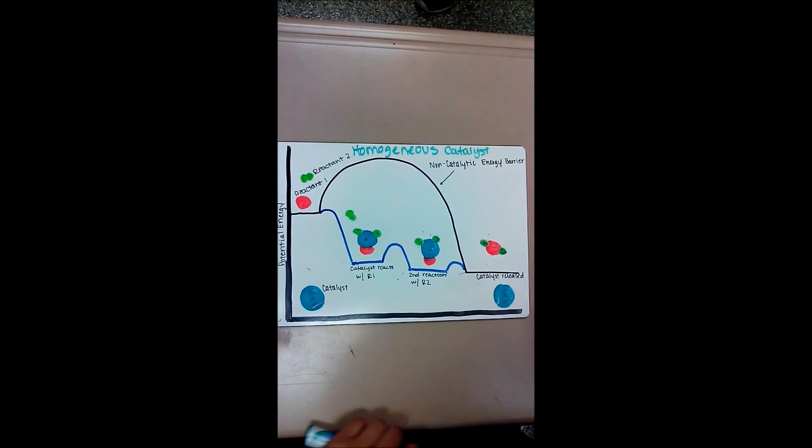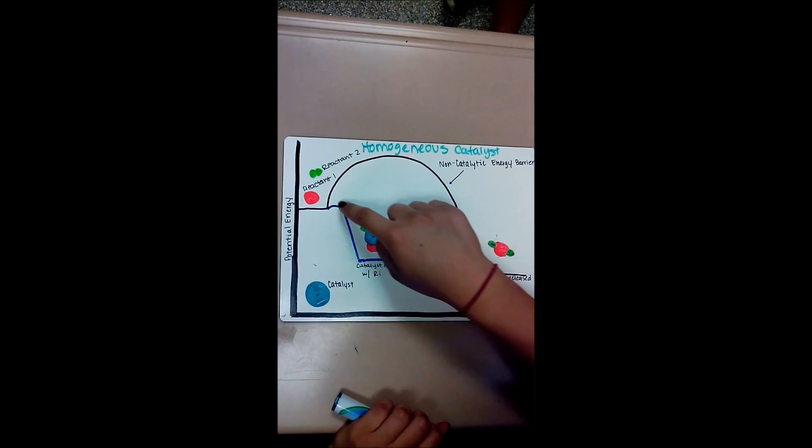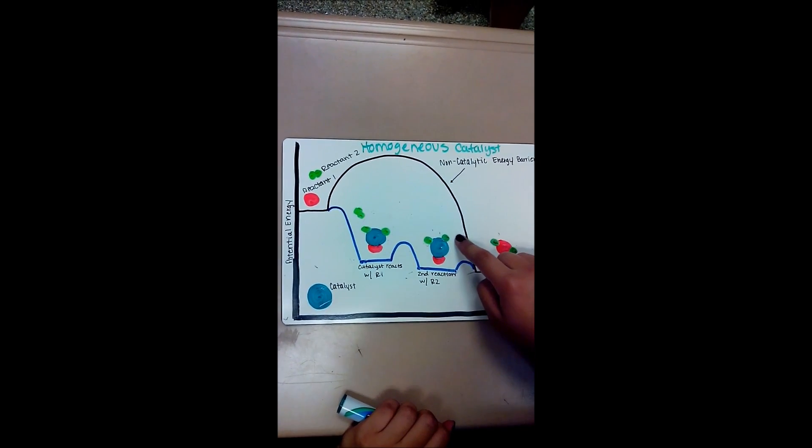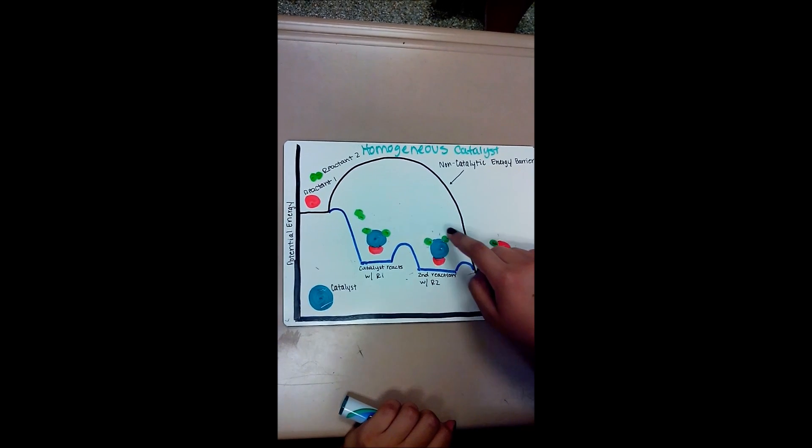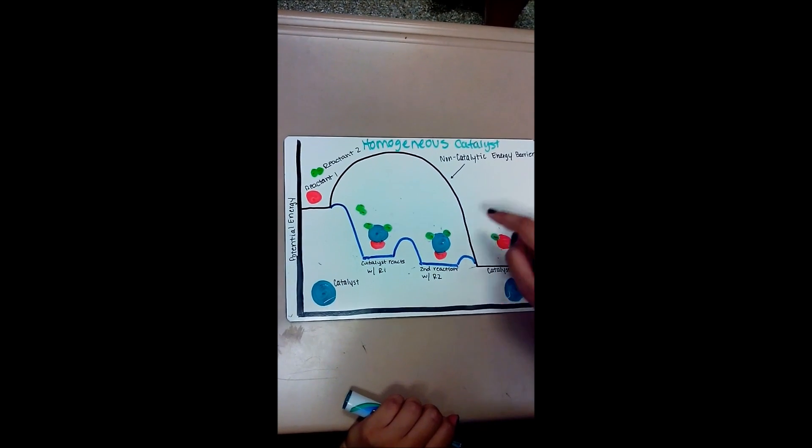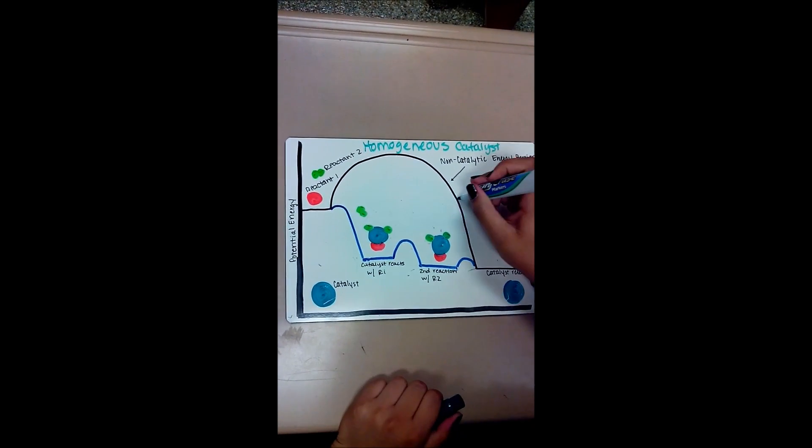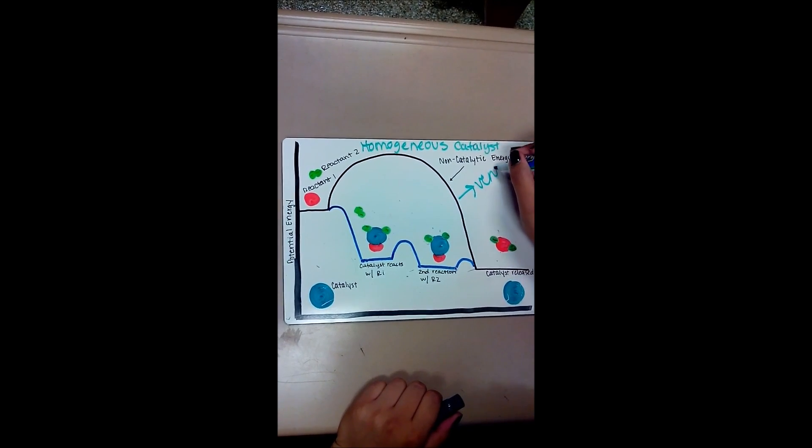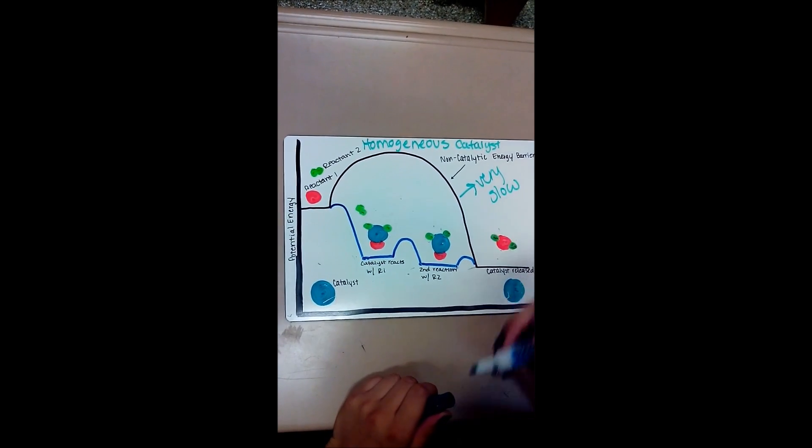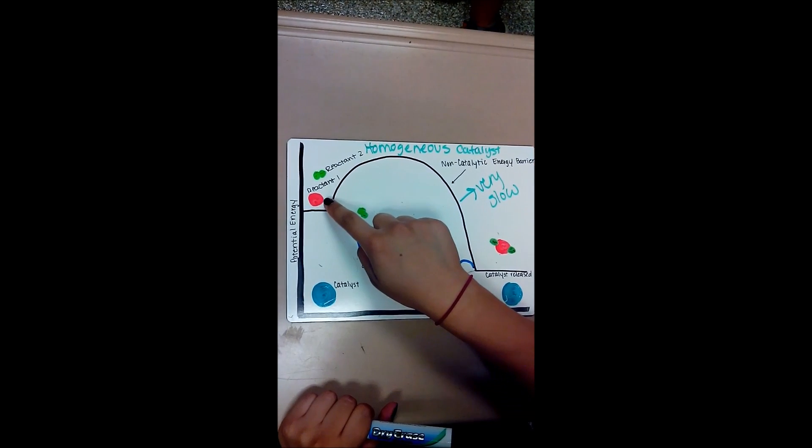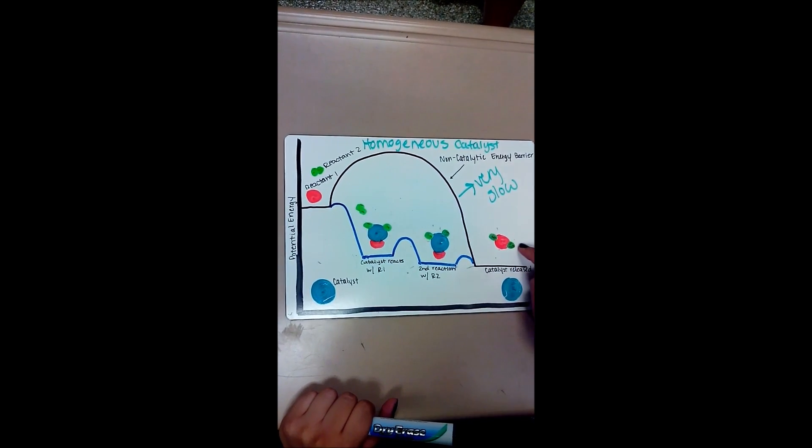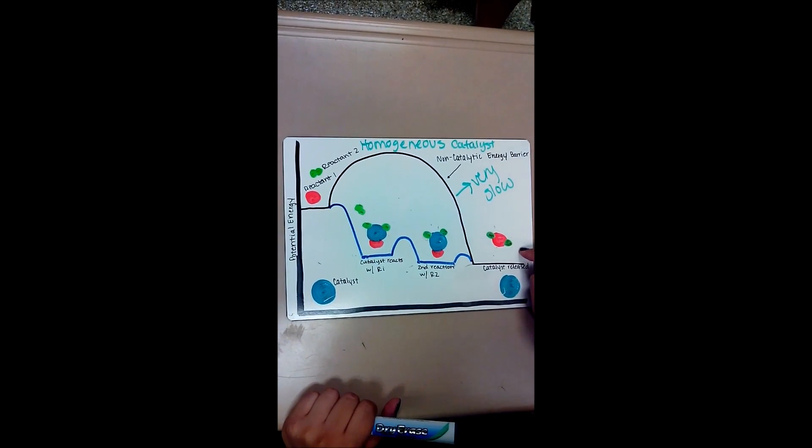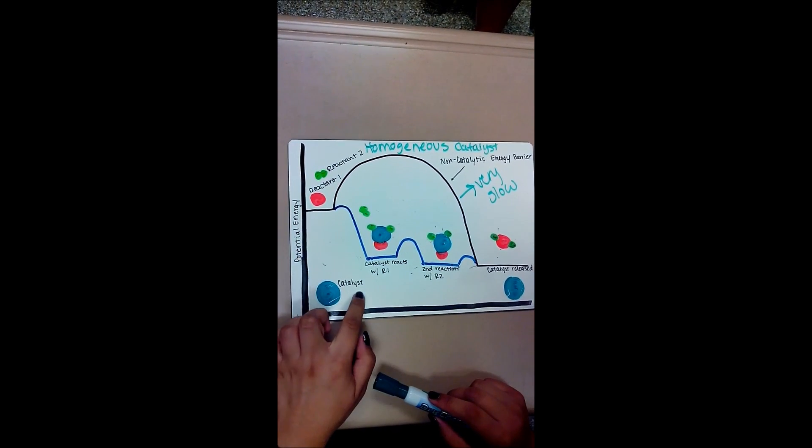Here we have an example of a homogeneous catalyst. Here you can see how the barrier with the black line would be the reaction without a catalyst. And this would be very slow too. And it still gets to the same place it would without a catalyst, but it would just be very slow. But here in adding a catalyst, here we have an example of what the catalyst would look like.